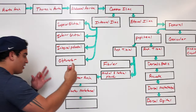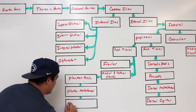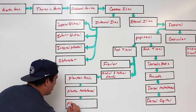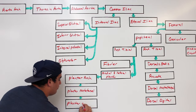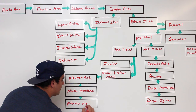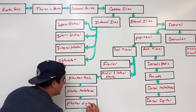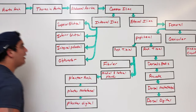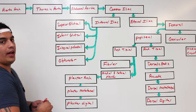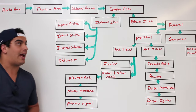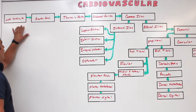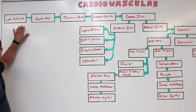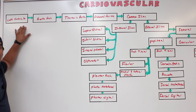From the plantar metatarsal arteries, the blood continues to the digits — these final branches are called the plantar digital arteries.